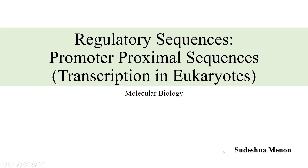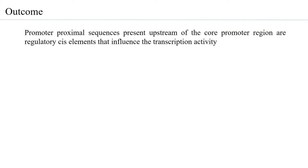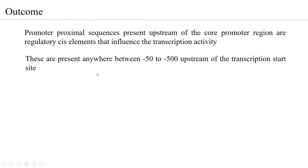Promoter proximal sequences are regulatory sequences required in transcription, especially in higher eukaryotes. Promoter proximal sequences are generally present upstream of the core promoter region and are regulatory elements — DNA motifs that influence transcription activity. These are present anywhere between minus 50 to minus 500 upstream of the transcription start site, although majorly they have been found between minus 70 to minus 200 base pairs.